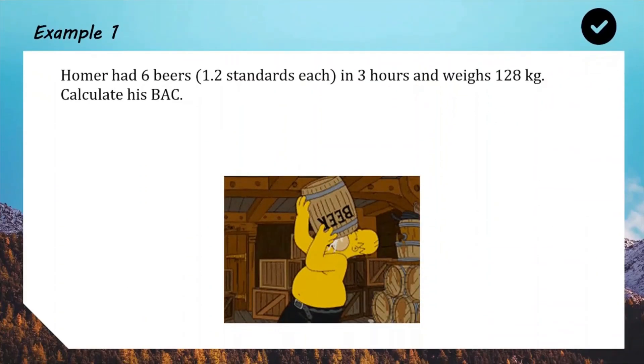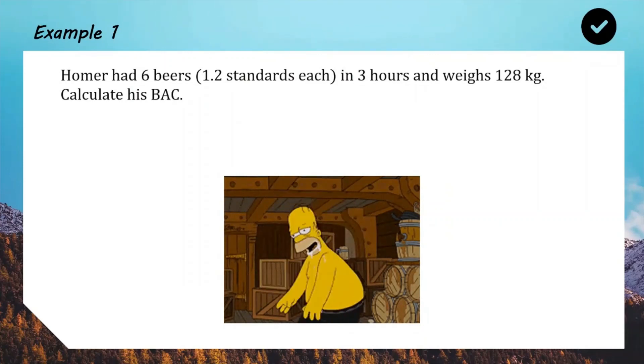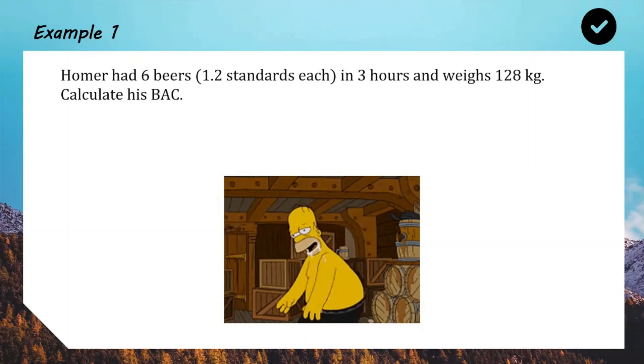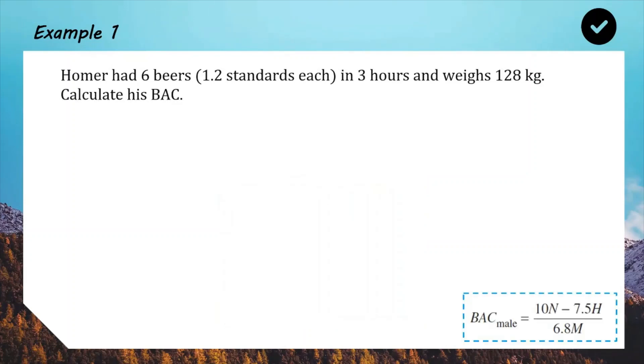For our first example, we have Homer had six beers, and each of those beers, like I said, not always one standard. In this case, they're 1.2 standards each. He was drinking over three hours, and his weight is approximately 128 kilograms. Don't know if that's accurate, I just made it up, sorry. We're going to use that information and our formula to calculate his blood alcohol content. So we're going to get our formula that we just hopefully wrote down. Now I want you to pause the video and have a go at substituting the information in the question into this formula and see if you can get an answer.